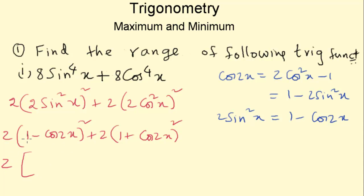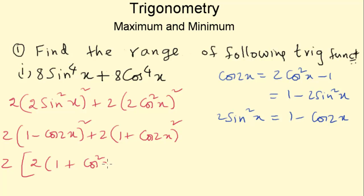Taking 2 common out, this is of the form (a minus b) whole square plus (a plus b) whole square, which equals 2 times (a square plus b square). So this becomes 2 times (1 plus cos square 2x), giving us 4 times (1 plus cos square 2x).